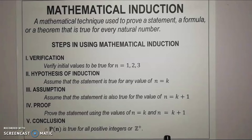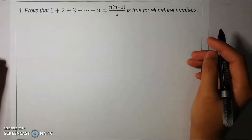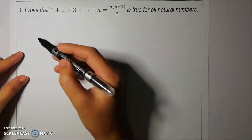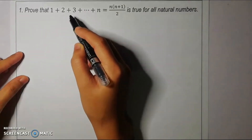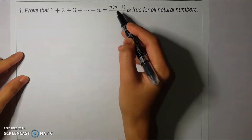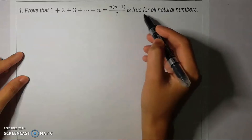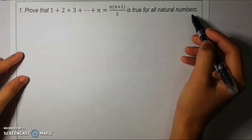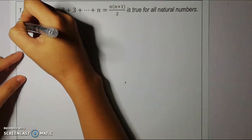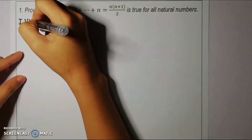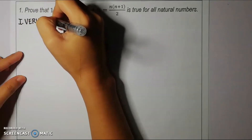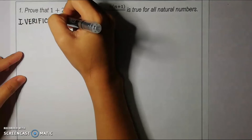For our first example, we need to prove that 1 plus 2 plus 3 plus ... plus n is equal to n times (n plus 1) over 2, and that this is true for all natural numbers. We will start with the first step, which is verification, and replace the values of n with 1, 2, and 3.